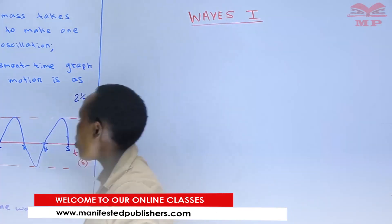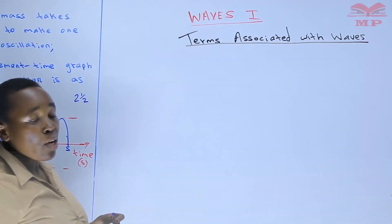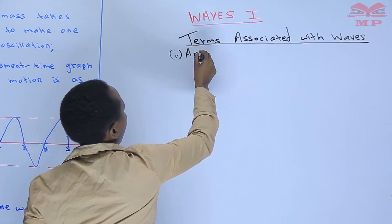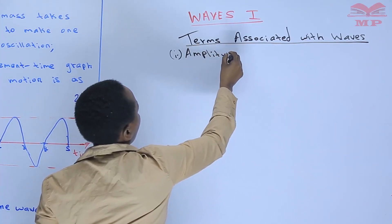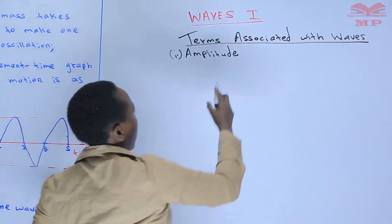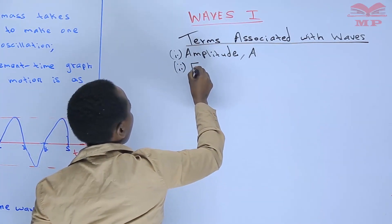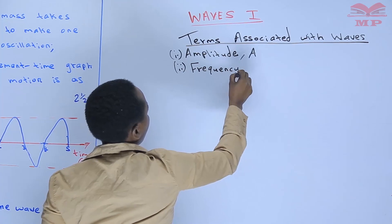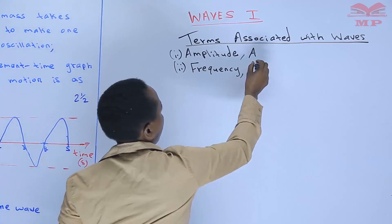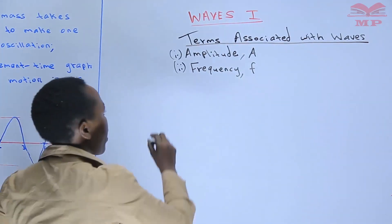We look at terms associated with waves. We start by listing them down and will discuss the following terms. Number one: amplitude, denoted by capital letter A. Number two: frequency, denoted by small letter f.